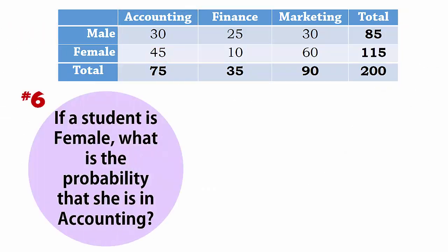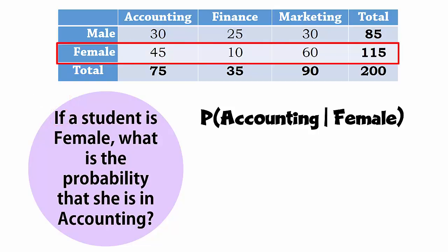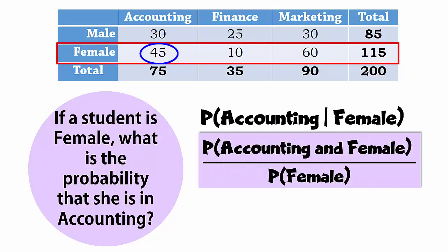Number 6: If a student is female, what is the probability that she is in accounting? The word 'if' here plays the same role as 'given.' In essence, we're looking for the probability of accounting given female — that is, what proportion of the female students are in accounting? So we take the number of accounting students that are female and divide by the number of female students, which equals 45 over 115, giving 0.391.